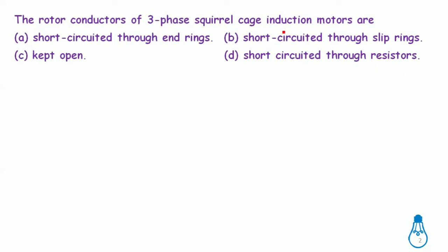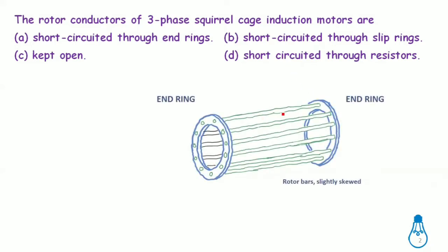The squirrel cage induction motor rotor conductors are copper bars. These copper bars are connected through end rings and are short-circuited. As shown in the diagram, the green color represents the copper bars, which are connected by end rings completing the short circuit.